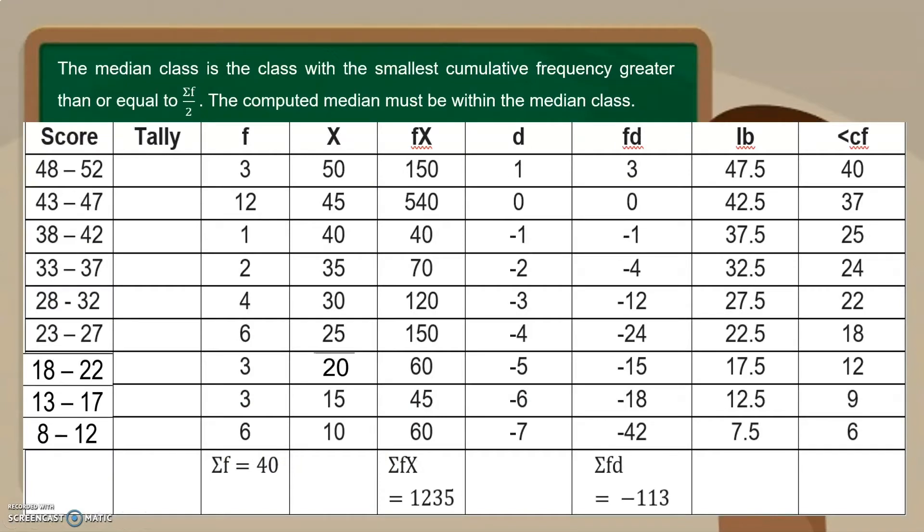Since kompleto na natin ngayon yung table, next week, kailangan natin hanapin kung alin dyan yung ating median class. Okay? So, the median class is the class with the smallest cumulative frequency greater than or equal to summation of f over 2. The computed median must be within the median class. Okay? So, first, kailangan natin hanapin kung nasaan to. Okay? Ano ba ang summation ng f over 2? Diba 40 yan? So, ibig sabihin 40 divided by 2, that is 20. 40 divided by 2, 20.